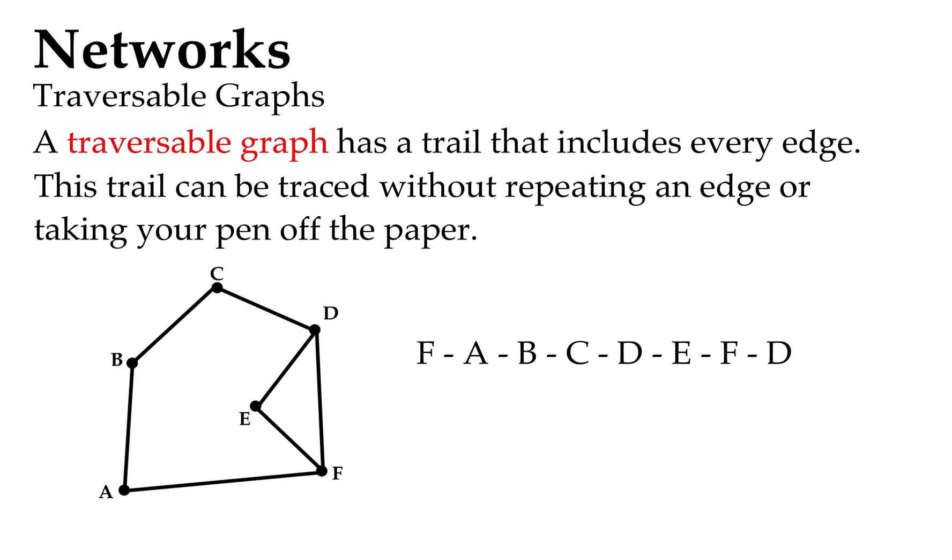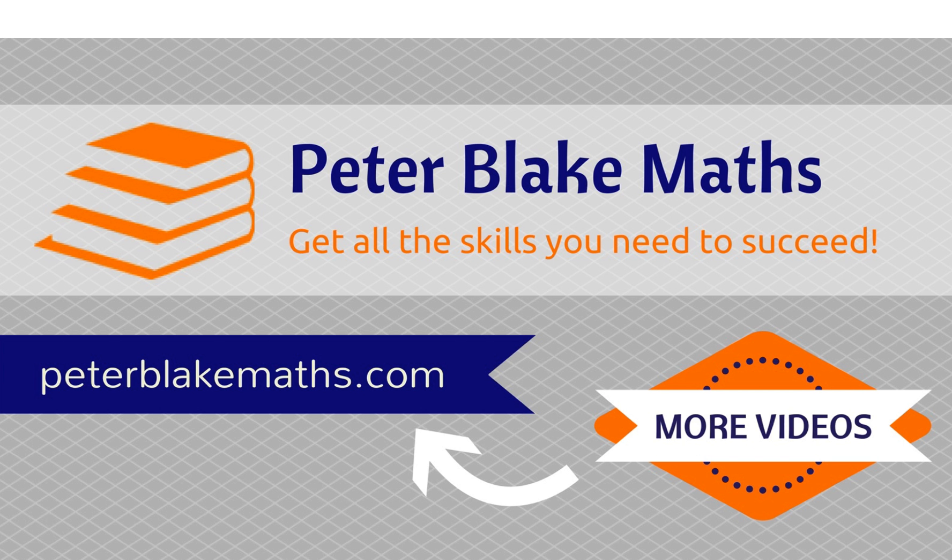If we go from F to A to B to C to D to E to F and back to D, we've traced every edge. We haven't repeated any and we haven't taken our pen off the paper, so we have, by definition, ticked off all the conditions for a traversable graph. And that's that - pretty quick definition there.